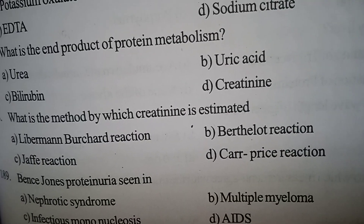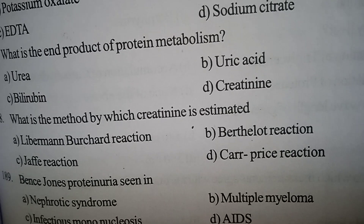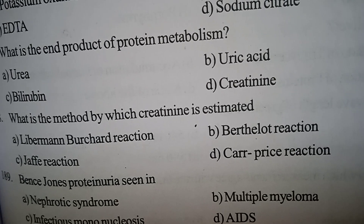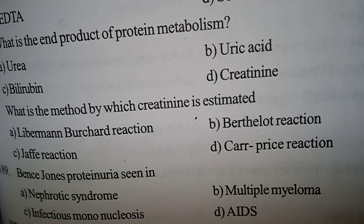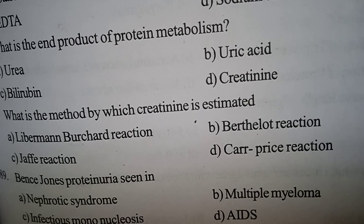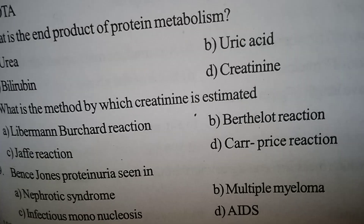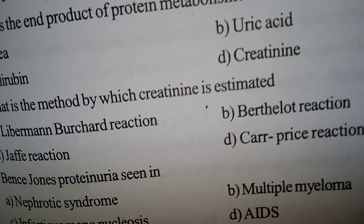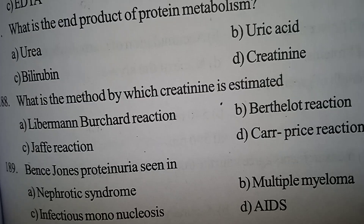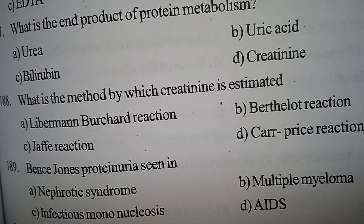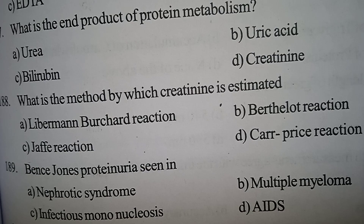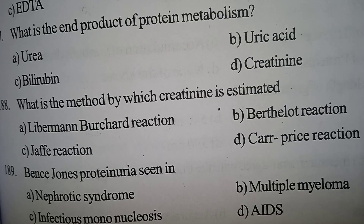Next one. Bence-Jones proteinuria is seen in: Option A: Nephrotic syndrome. Option B: Multiple myeloma. Option C: Infectious mononucleosis. Option D: Acquired immunodeficiency syndrome. Correct answer: Option B — Multiple myeloma. Bence-Jones protein is present in multiple myeloma.